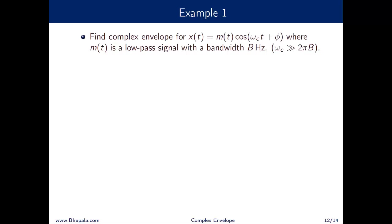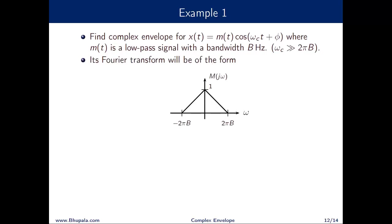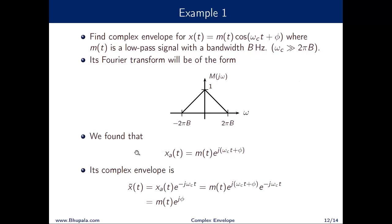Let us take the same example: x(t) = m(t)·cos(ωct), where m(t) is band-limited with bandwidth B Hz and ωc ≫ 2πB. We already found the analytic signal to be x_a(t) = m(t)·e^(j(ωct + φ)). Hence the complex envelope is x_a(t)·e^(−jωct) = m(t)·e^(jφ).